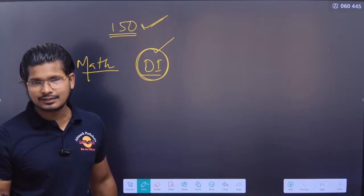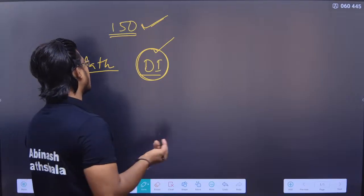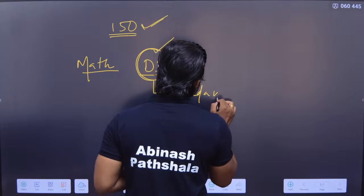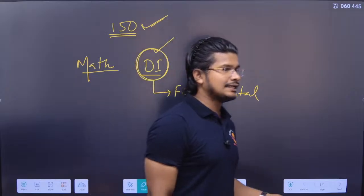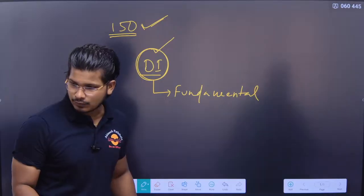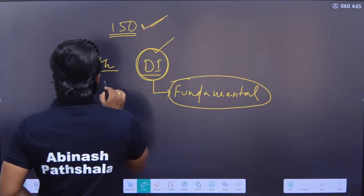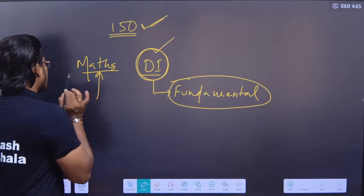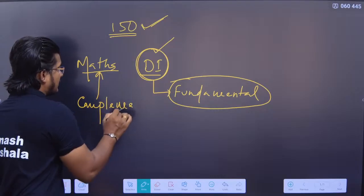You can check in the application — Data Interpretation at fundamental and advanced level: line graph, pie chart, bar chart, table DI. You need to practice math. The complete math batch playlist is more than enough — follow the complete math playlist.